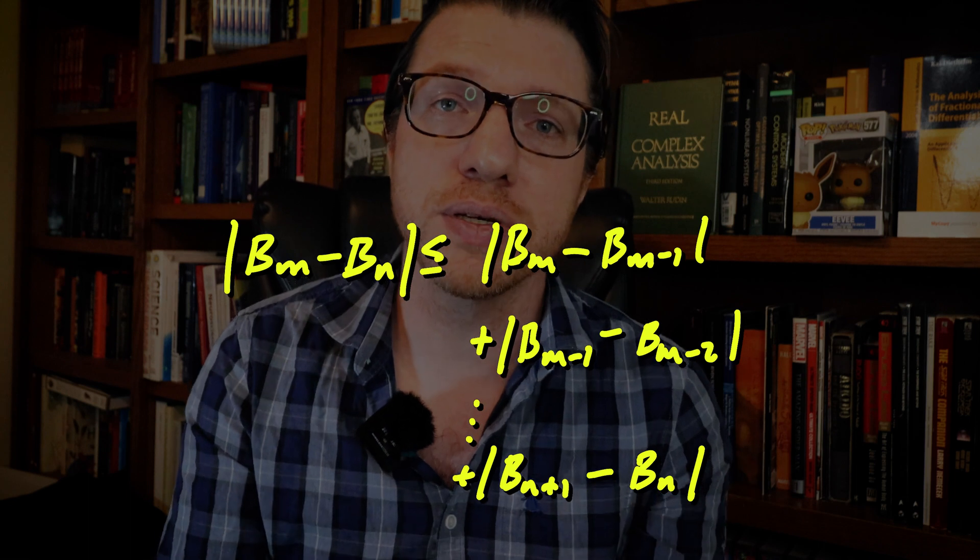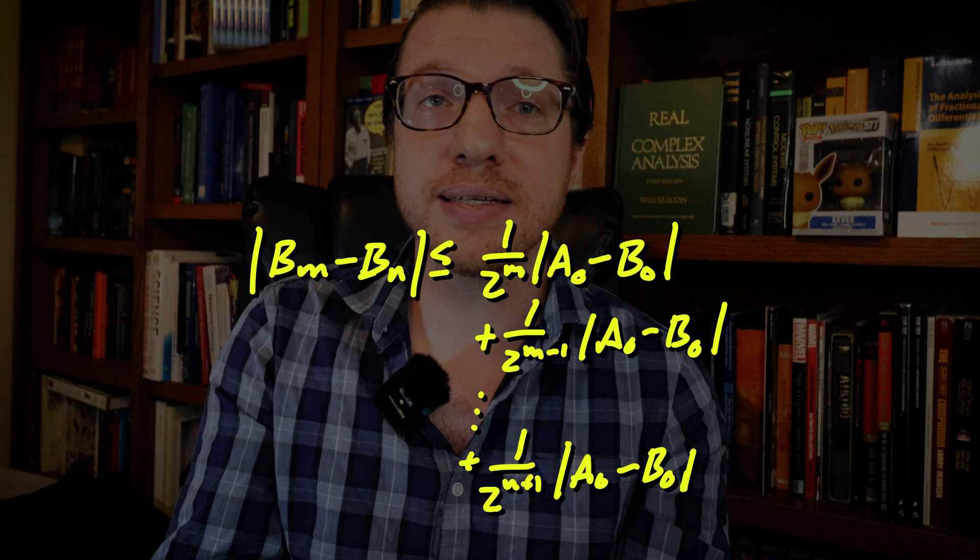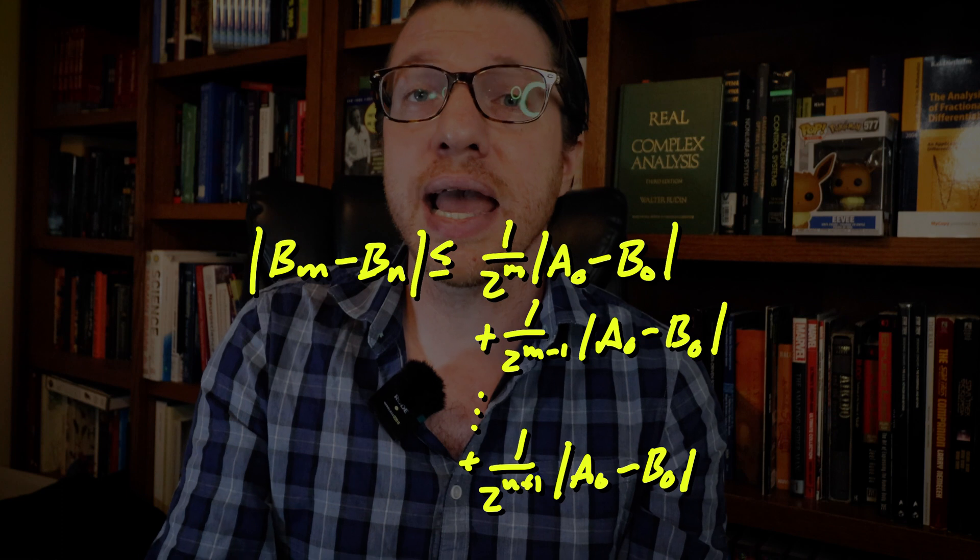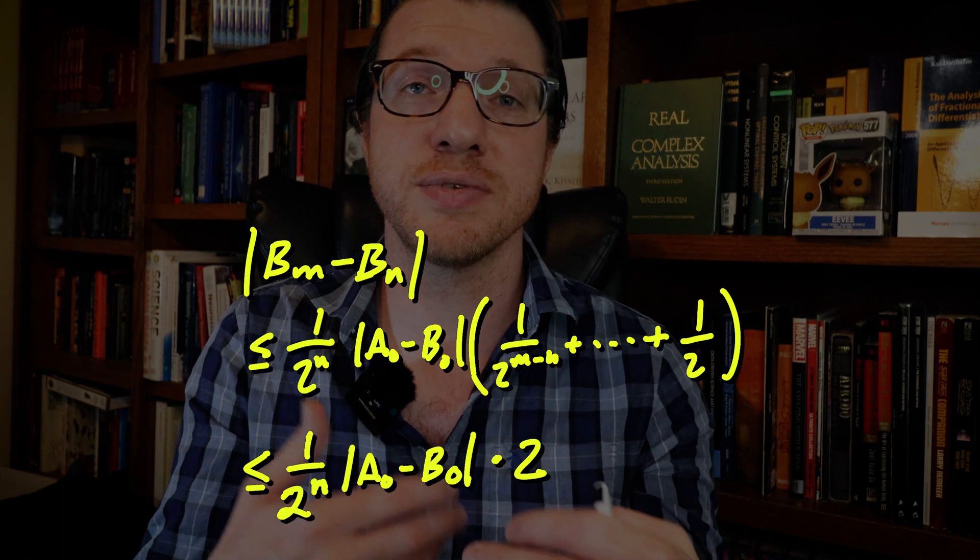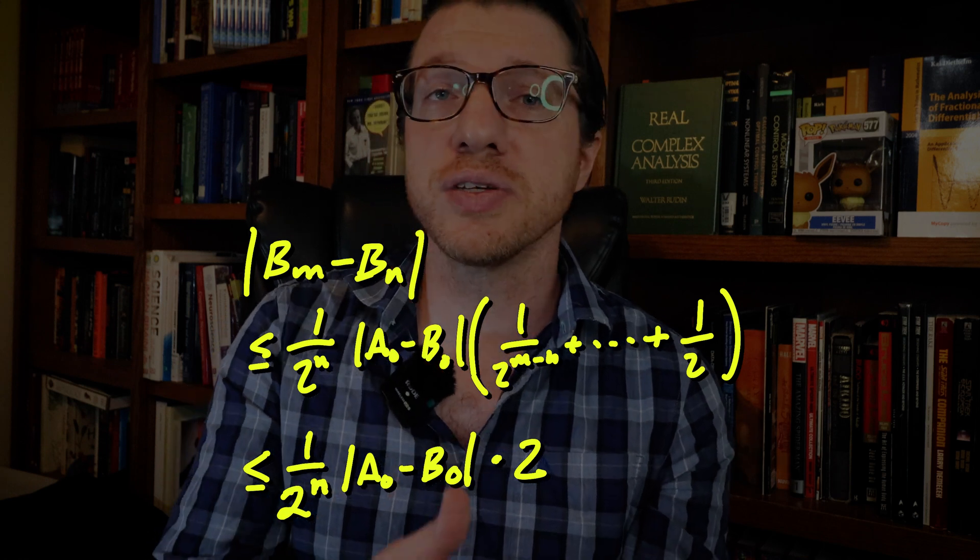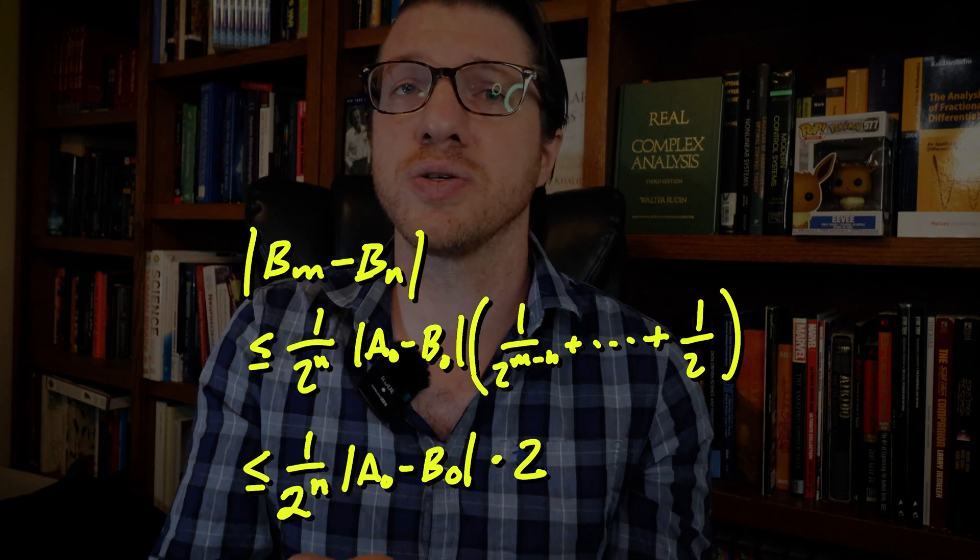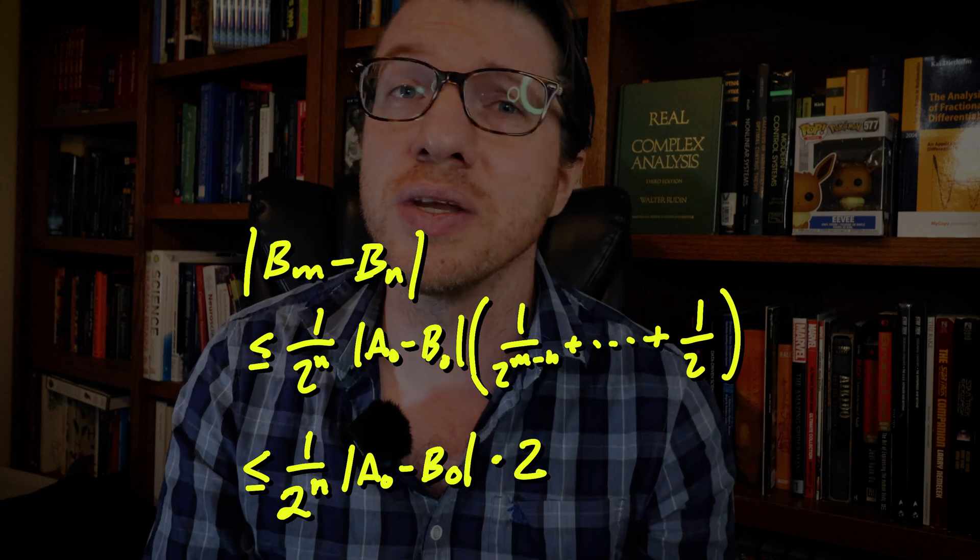Each one of these individual terms we know can be written like this, where we have the same distance between a0 and b0 and a power of one-half. Factor out the absolute value and a one-half to the end, and we're left with a geometric sum of one-halves. Now what we're going to do is we're going to try to simplify that sum on the right. And we're going to use the fact that the series of powers of two equals two. And that is something that goes back to the Greeks around 350 BC or even earlier. I use that date because that's when Euclid was kicking around. So we see that the distance between bm and bn is bounded by a constant times one-half to the nth power.